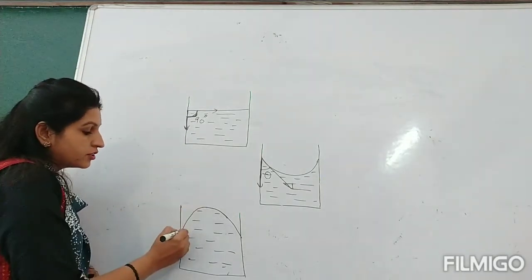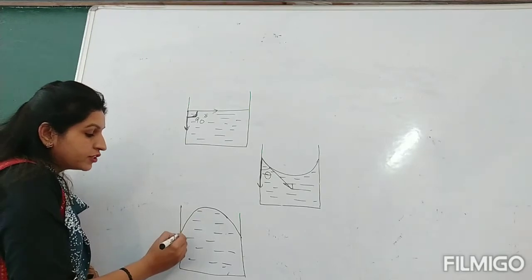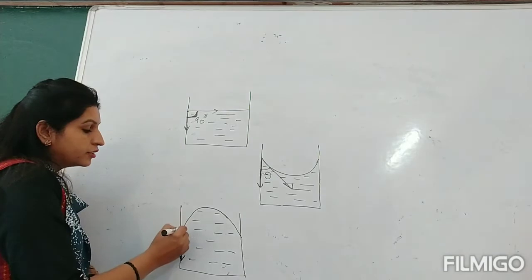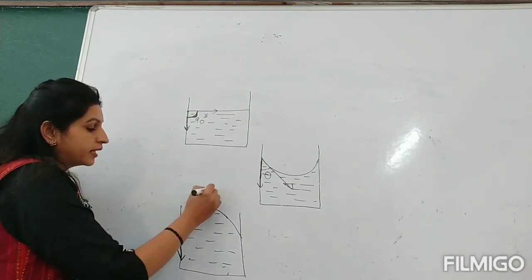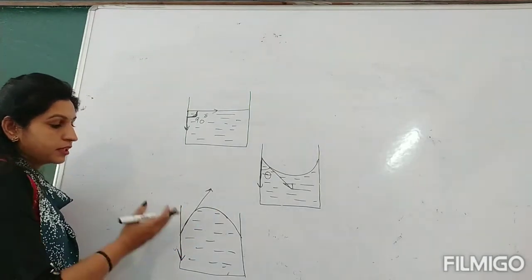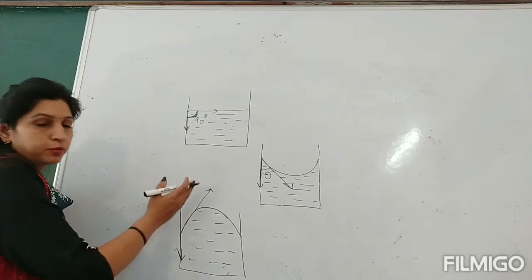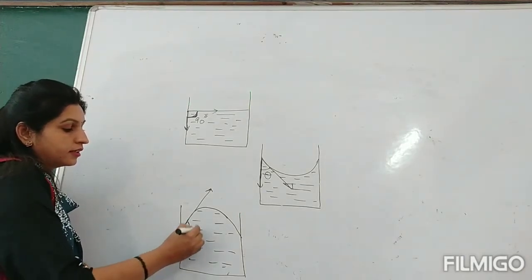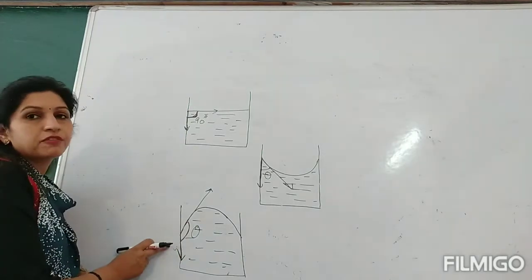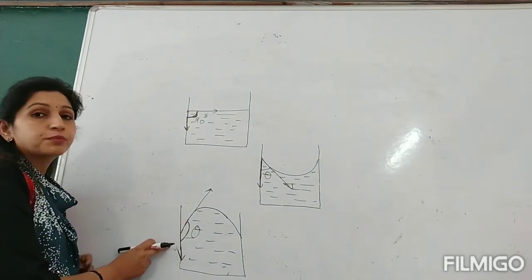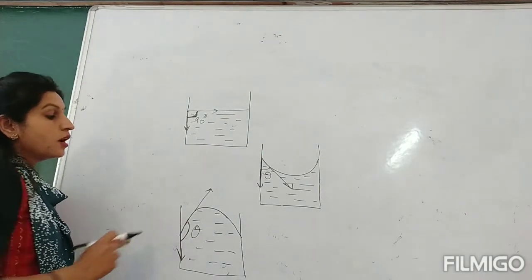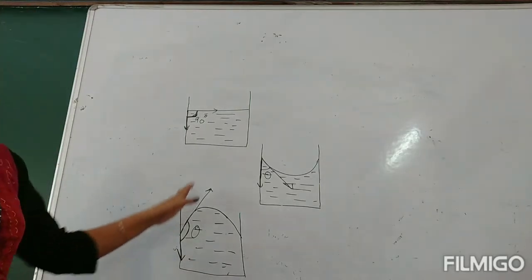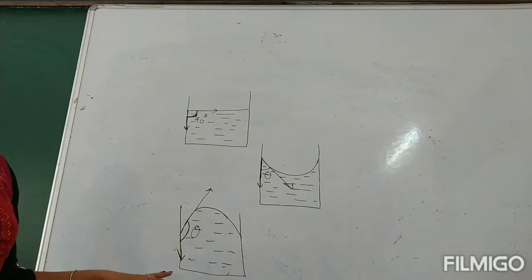For the convex meniscus, when you draw one tangent to the solid surface and one tangent to the liquid surface going upward, the angle of contact theta is clearly obtuse. So whenever the angle of contact is obtuse, it means a convex meniscus is formed.